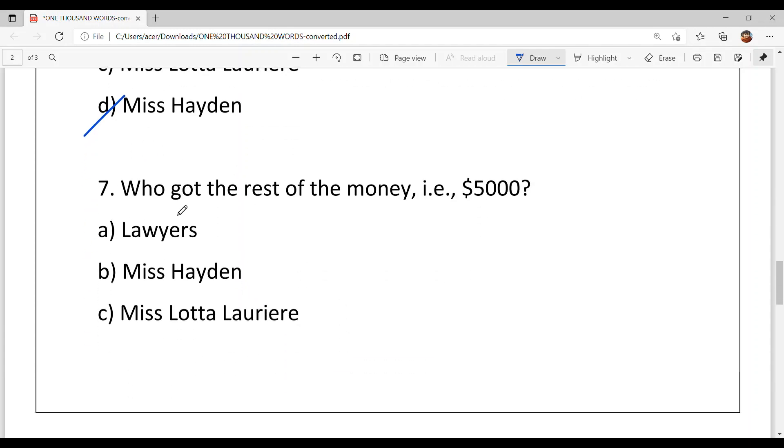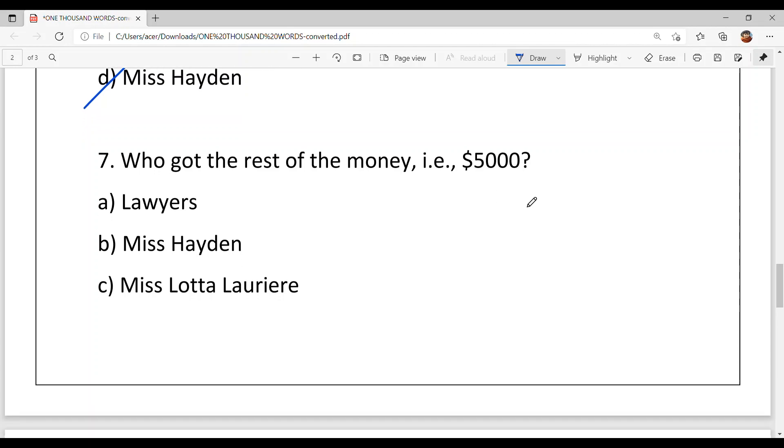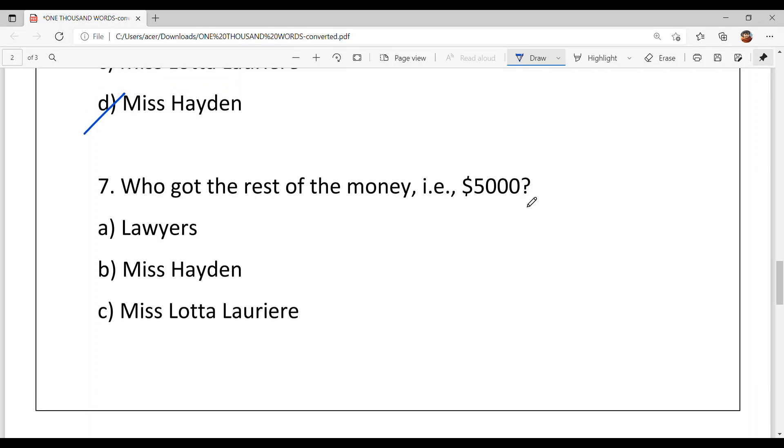Seventh, who got the rest of the money that is $5,000? Because there was a condition that if Robert could not properly spend the $1,000, could not account for it, then the amount which is $5,000, according to the will, would automatically go to whom?